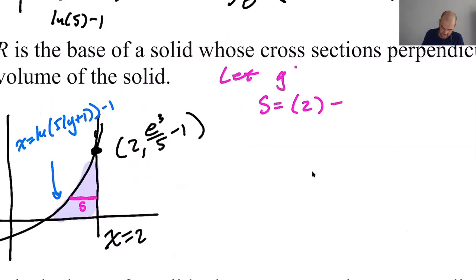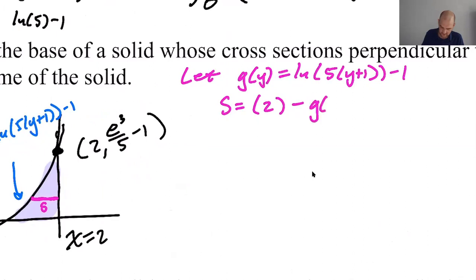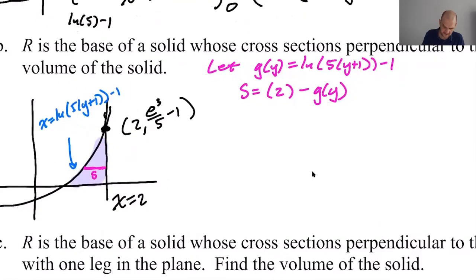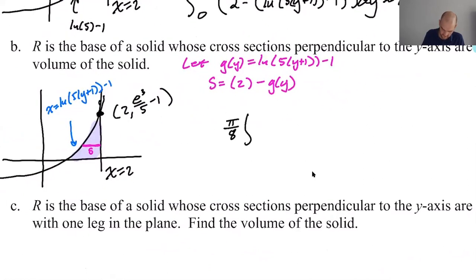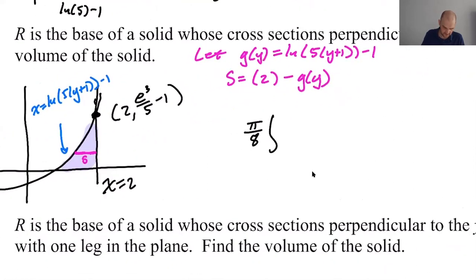Let's do a let statement. Let G of y equal that stupid thing, the natural log of 5 quantity y plus 1. So you saw, I kind of screwed myself over by not doing this before. I got a problem wrong on the calculator because I hadn't done that. That's S, right? Right takeaway left. Now what we want to do is semicircles. So semicircles, we know, are just pi over 8, integral of S squared. So it's going to be pi over 8, the integral from... All right. So where we start, since we're perpendicular to the y-axis, we need to use y values. If we start at 0, we end at e cubed over 5 minus 1, delightfully. So 0 to e cubed over 5 minus 1 of S, which is 2 minus g of y squared, dy. That's it.